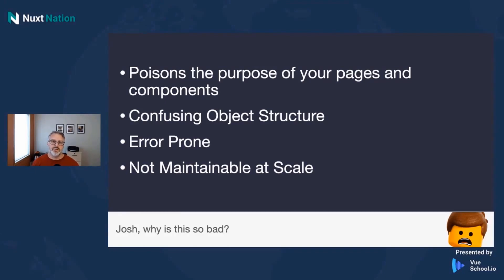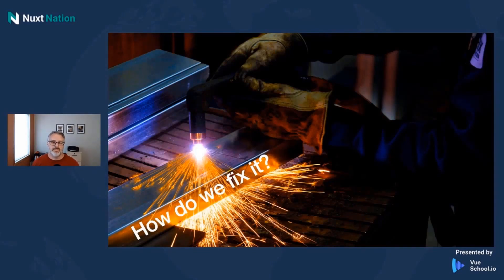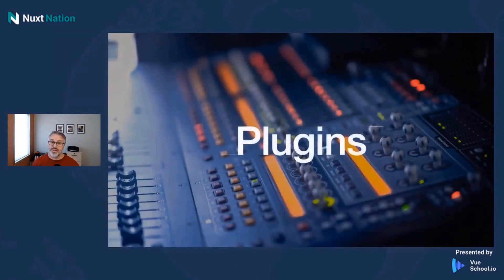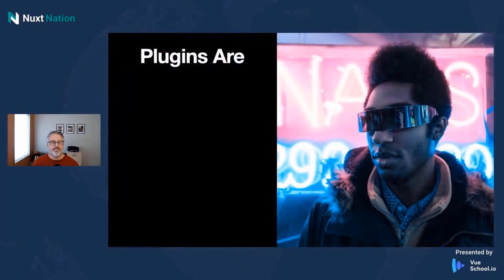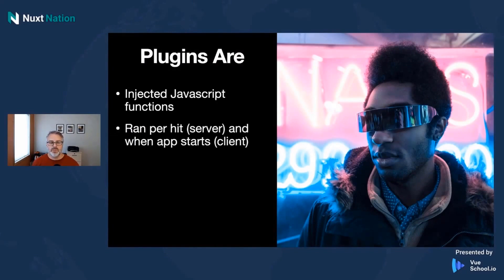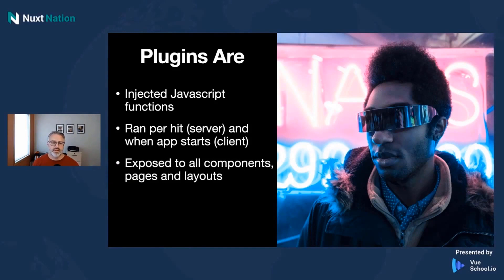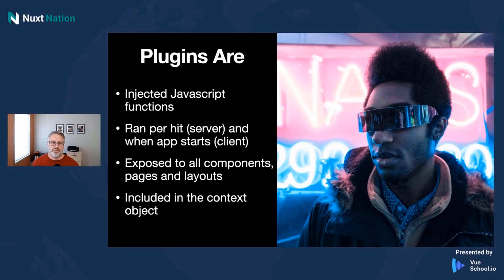For us, we have about 20 or more integrations at Realtruck. Imagine what the layout or pages would look like with all that JavaScript trying to spin up and do different things. So how do we fix it? With plugins. As a reminder, Nuxt plugins are just injected JavaScript functions. They run once per hit on the server, and then again when the app starts up in the browser. They're exposed to all pages and layouts, and even better, they're exposed to the context object — so almost everywhere in Nuxt, you can use these, and they're globally available.